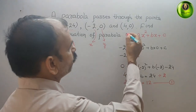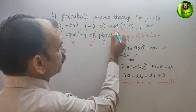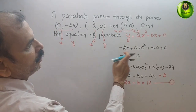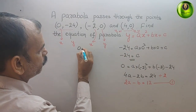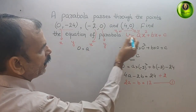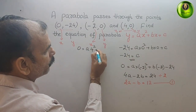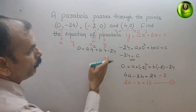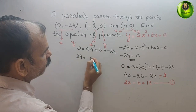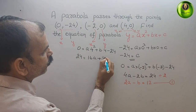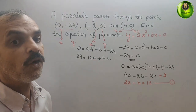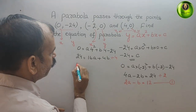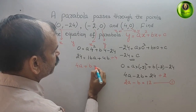Now we substitute the third point: (4, 0). Here 4 is x and 0 is y. We get: 0 = a(4)² + b(4) - 24, so 24 = 16a + 4b. Dividing by 4, we get the new equation: 4a + b = 6. This is our second equation.